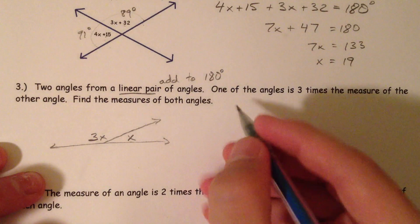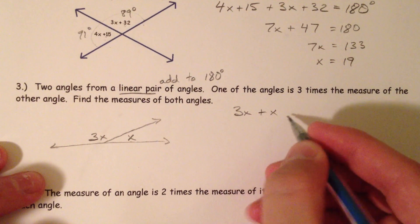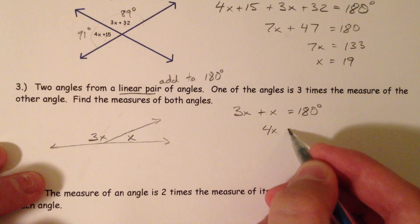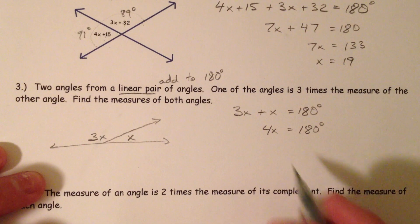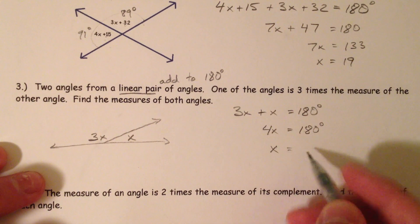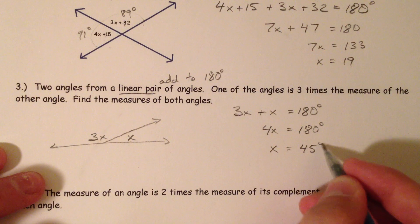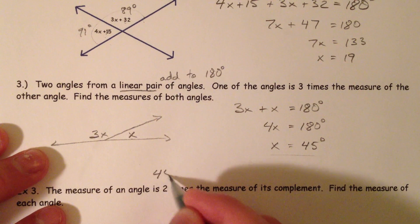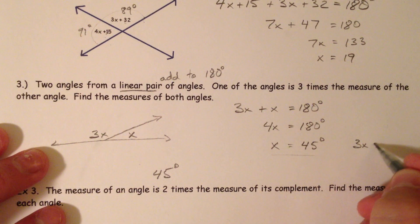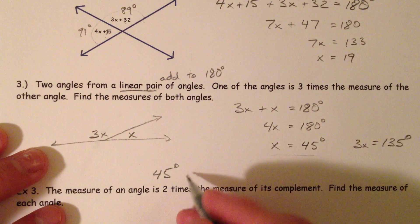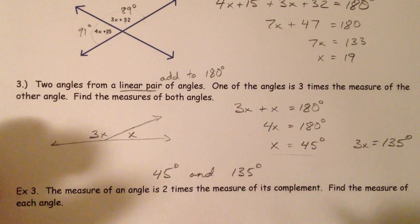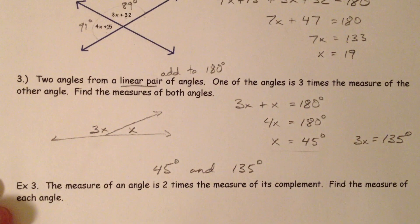But what we do know is that a linear pair has to add up to 180. And so we could write another equation. 3X plus X has to equal 180. And then 4X equals 180. And if you divide by 4, 45 degrees. So that's the one angle, 45 degrees. And the other angle is 3 times X, and that's going to be 135, 3 times 45. And so your two angles, 45 and 135. One is 3 times the other and they both add up to 180. So we're good to go.